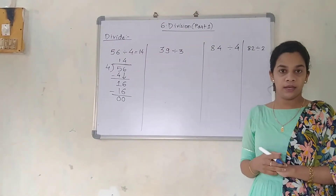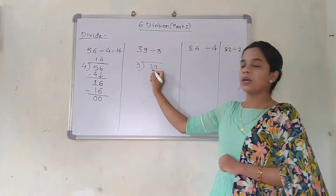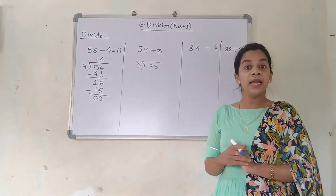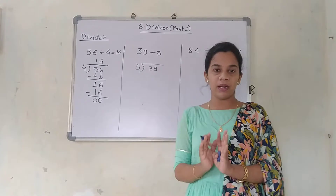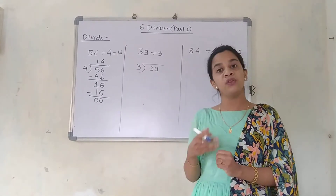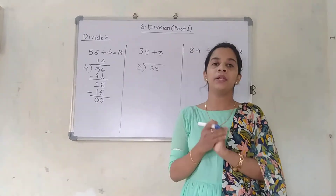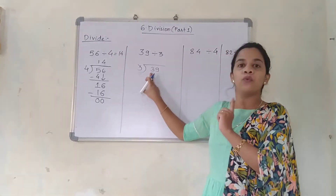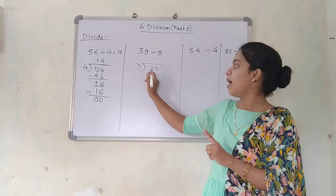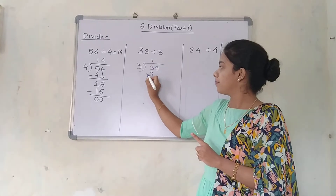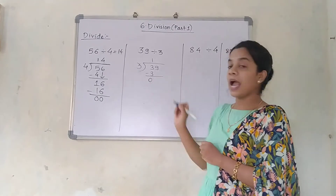Our next question is 39 divided by 3. I am going to write 3 here and 39 here. Now just focus on 39 — it is bigger than 30, that is 3 tens are 30. But this number is 39, which is bigger than 30. So we are going to hold only one number in our mind. We will only look at 3 first. 3 ones are 3. So 3 minus 3 is 0, and this 9 is remaining.